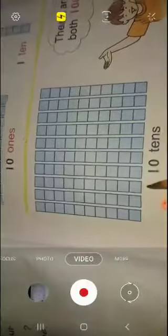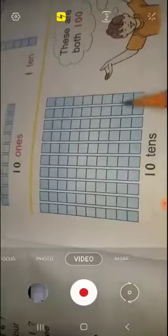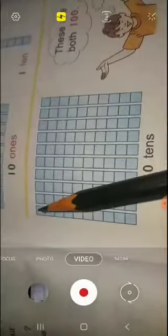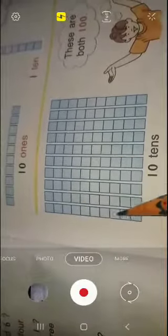How many long boxes are here? One long box, 2, 3, 4, 5, 6, 7, 8, 9 and 10. 10 long boxes are here. How many long boxes are there? How many small cubes are there? 10.